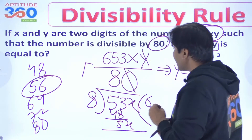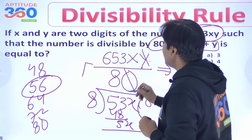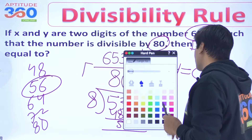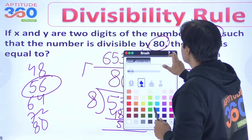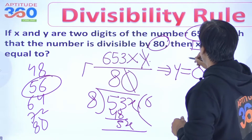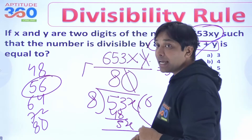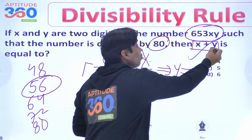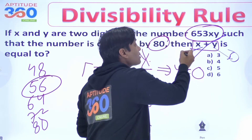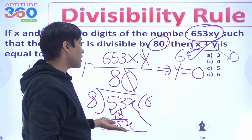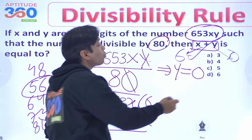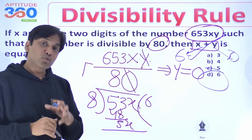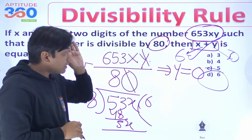So from that we get that the value of X turns out to be 6. And as soon as you know X is 6 and Y is 0, you need to find X plus Y — X being 6 and Y being 0 — so the sum of X and Y comes out as 6.